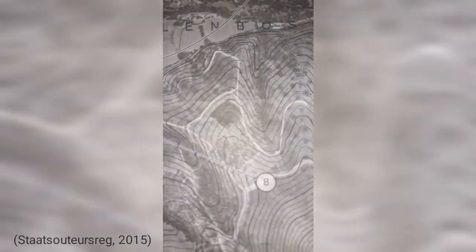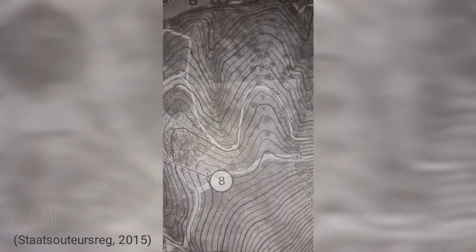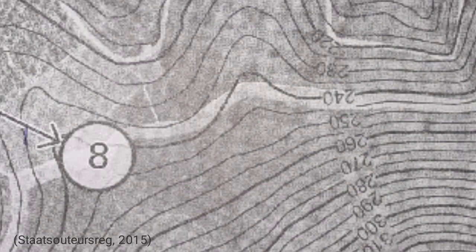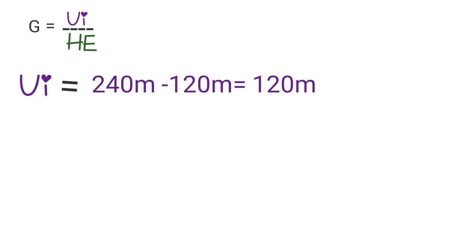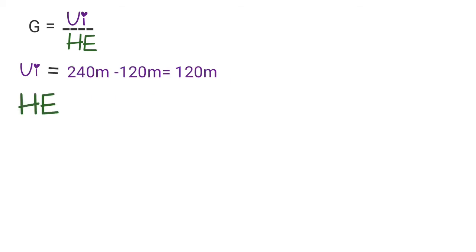Now for point 8 — it points to a contour line and when you trace it you can see it is 240. Now calculate the vertical interval by subtracting the smaller number from the bigger: 240 meters minus 120 meters equals 120 meters.